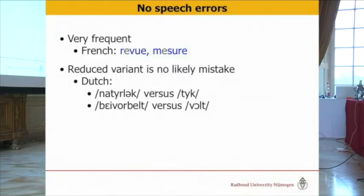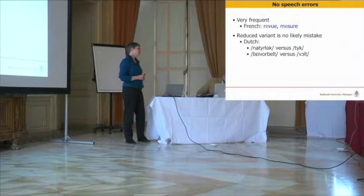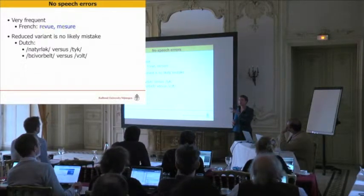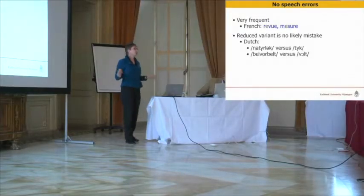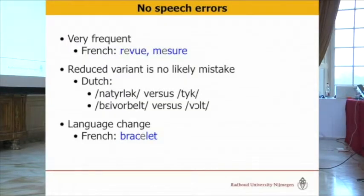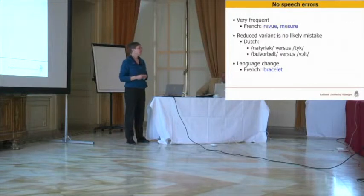A second reason is that the reduced pronunciation variants are often very different from the citation forms — there's quite a distance between the two forms. For instance, the Dutch word 'natuurlijk,' meaning 'of course,' has a reduced pronunciation variant 'tuurlijk' — how would you get from 'natuurlijk' to that by just an error? Similarly, the Dutch phrase 'bij voorbeeld,' meaning 'for example,' is often produced as something much shorter. A third argument is that these reduced pronunciation variants at a certain moment turn into the citation forms — the formal forms. I wouldn't expect a form resulting from a speech error to eventually become the citation form.